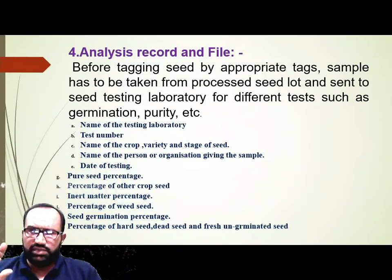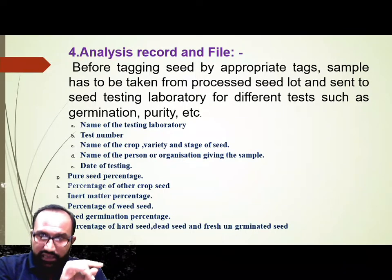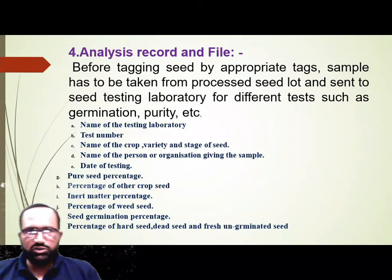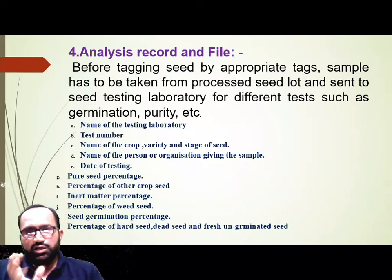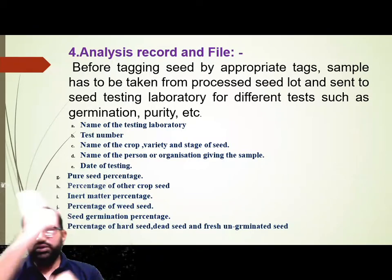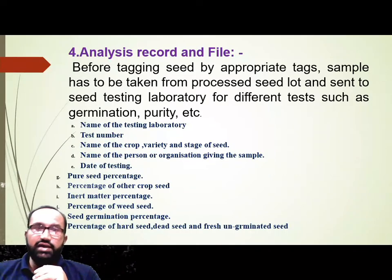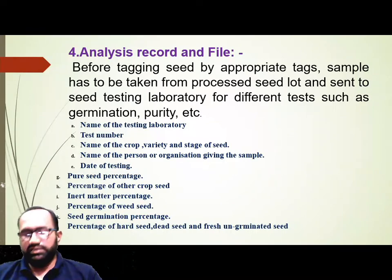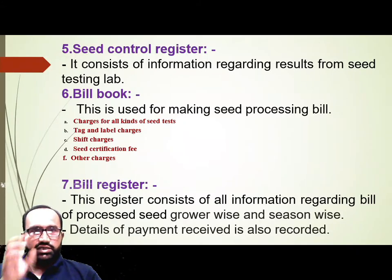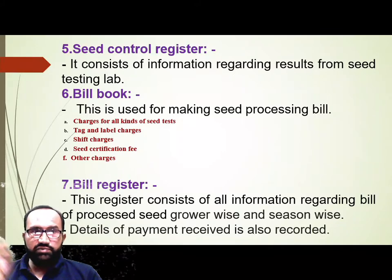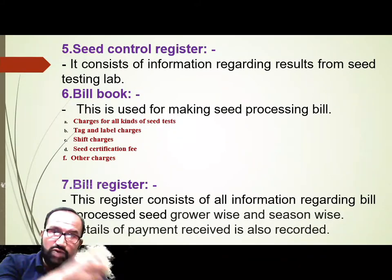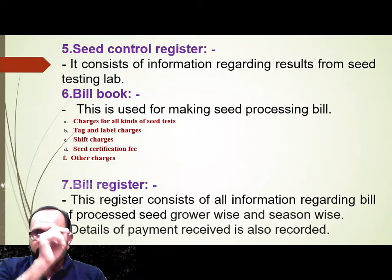The sample taken to the seed testing laboratory is tested completely. Not the entire seed lot — only a small sample is taken. Based on that sample, the results include: pure seed percentage, weed seed percentage, moisture percentage, and germination percentage. This analysis record and file is maintained. Next is the Seed Control Register, which contains information regarding the results from the seed testing lab — the analysis is mentioned in the Seed Control Register.